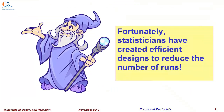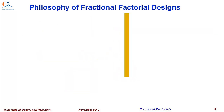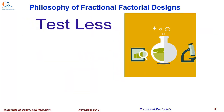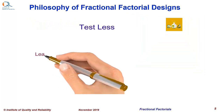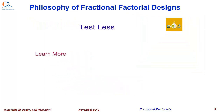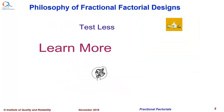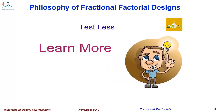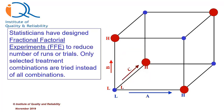Fortunately, statisticians have created efficient designs to reduce the number of runs. The philosophy of fractional factorial designs is less testing and more learning, or test less and learn more. So statisticians have designed fractional factorial experiments to reduce number of runs or trials. Only selected treatment combinations are tried instead of all combinations.